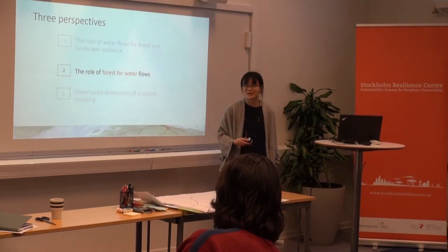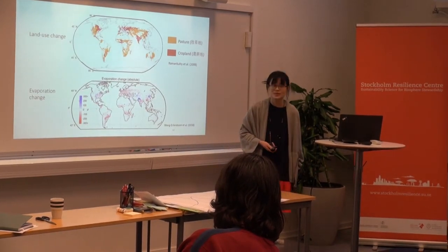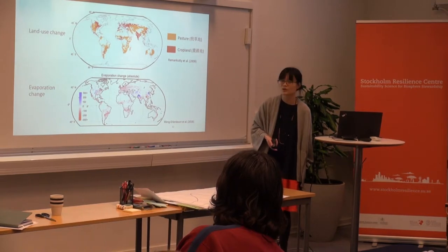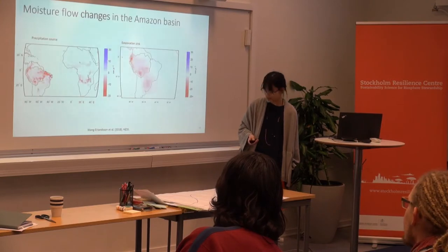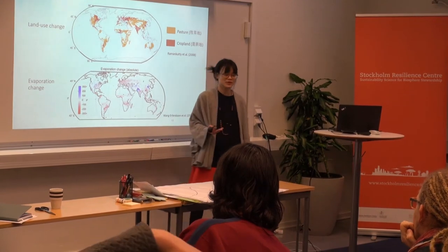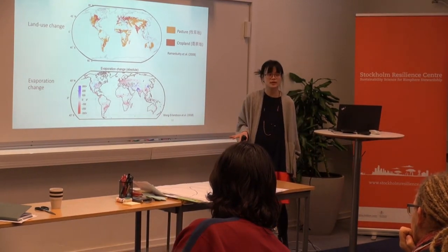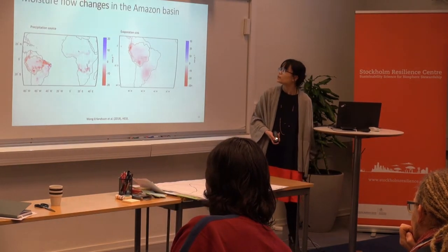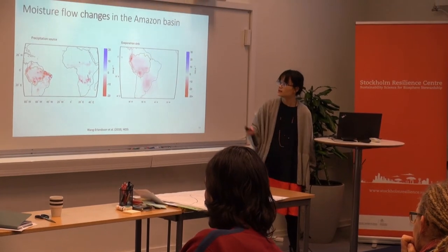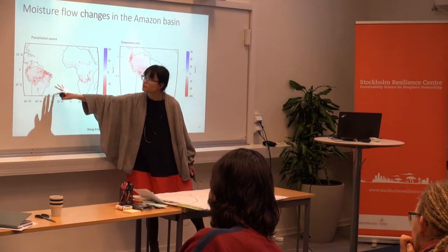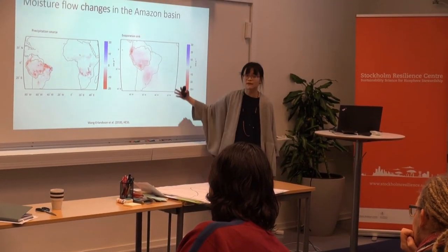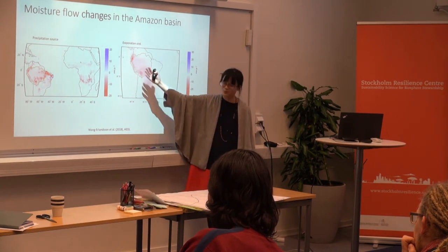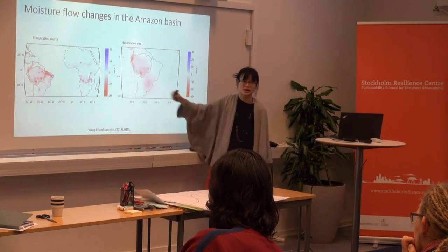The second perspective is the role of forest for the water cycle. In another model experiment, we looked at total human land use change — changing natural land into pasture and cropland — and the corresponding evaporation change. In blue we have an increase due to irrigation, and in red a decrease due to deforestation. In the Amazon region we have mainly reductions. Focusing on the Amazon basin, we see a reduction in rainfall within the basin, and also downwind in the region where the evaporation from the forest goes.